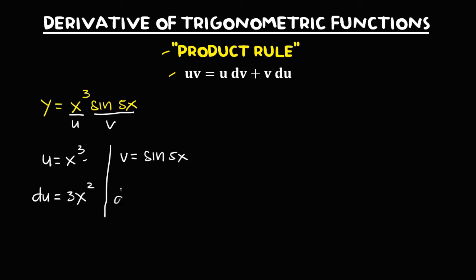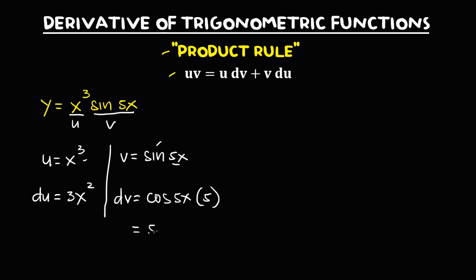For the derivative of v, since the derivative of sine is cosine, we have cosine 5x times the derivative of 5x, which is 5. So dv equals 5 times cosine 5x.